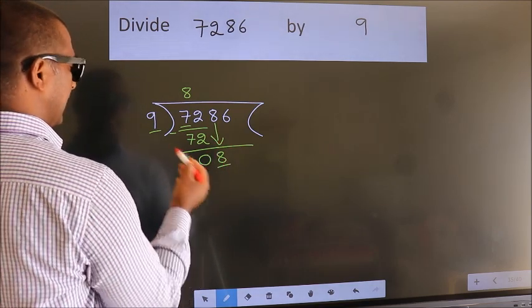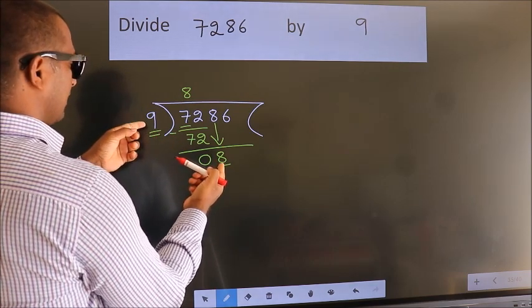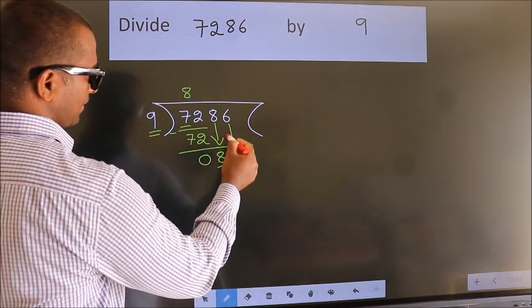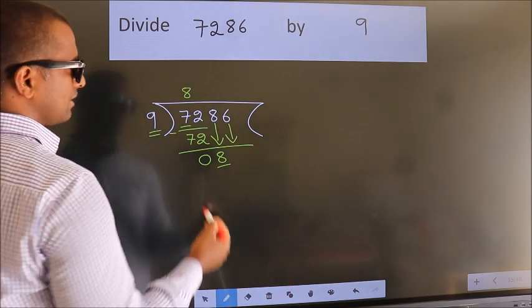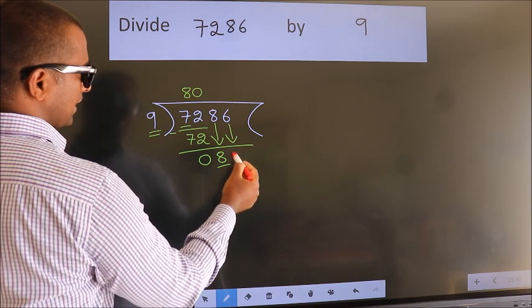Here we have 8, here 9. 8 is smaller than 9, so we should bring down the second number. And the rule to bring down the second number is put 0 here. Then only we can bring down this number.